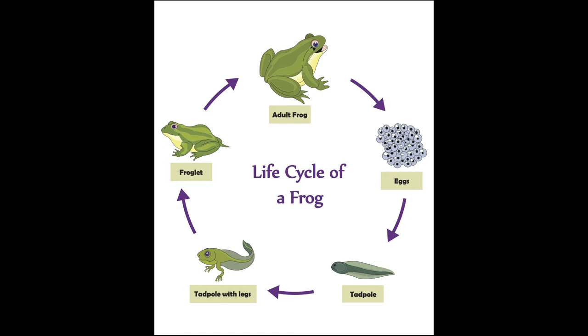Today we are going to examine the lifestyle of a frog by creating a poster. There are five steps in the life cycle of a frog. Step number one: eggs have to be laid. Two: they hatch and become tadpoles.